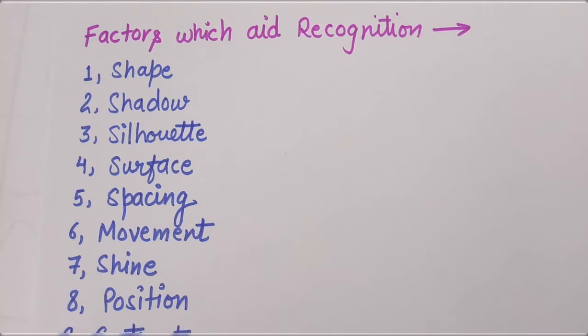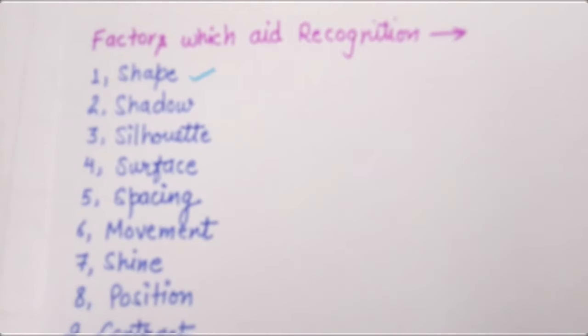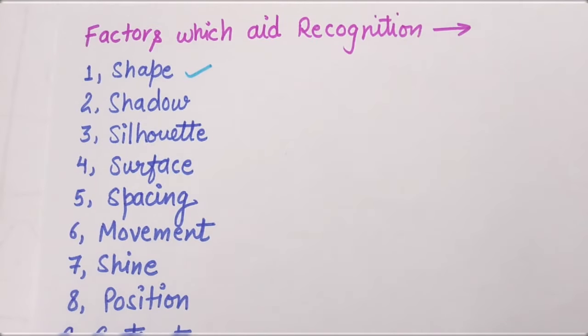All right, first of all, shape. Any object's shape is different. We can know what object is at a distance.